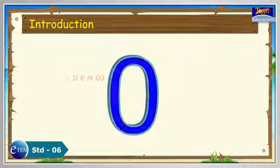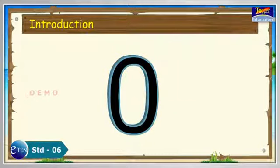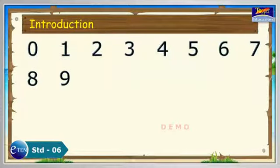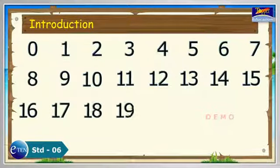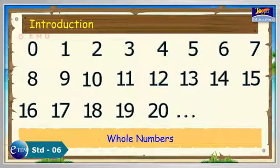With the invention of 0, the whole number system was formed. All the natural numbers along with 0 are called whole numbers.